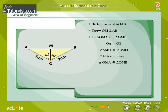So, by CPCT, we get AM is equal to BM and angle AOM is equal to angle BOM, which means that each angle is equal to 60 degrees.